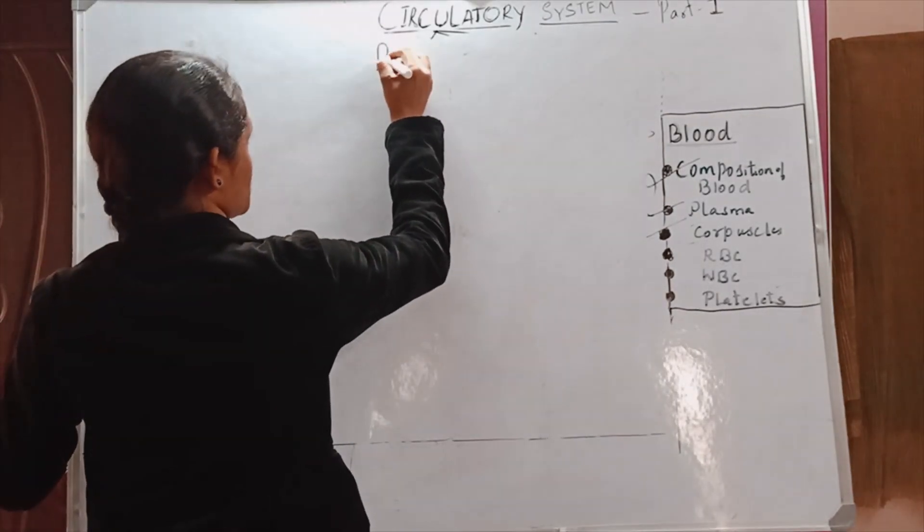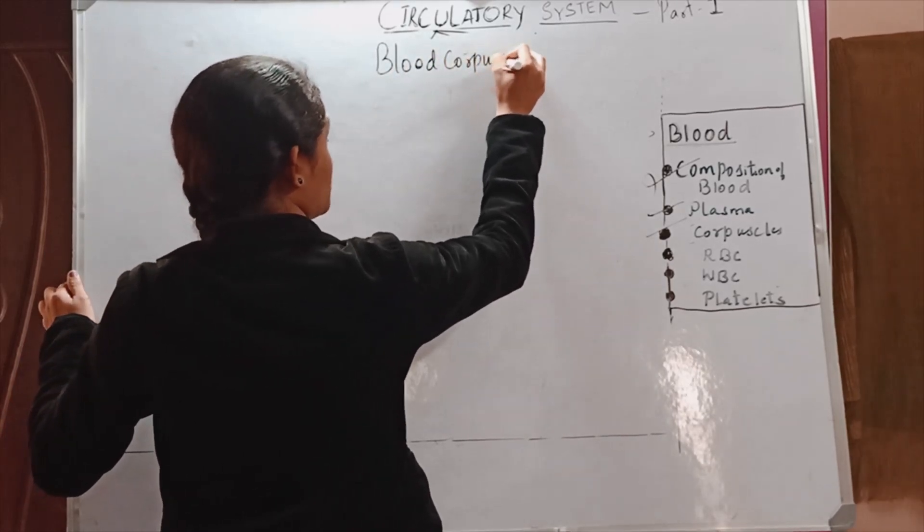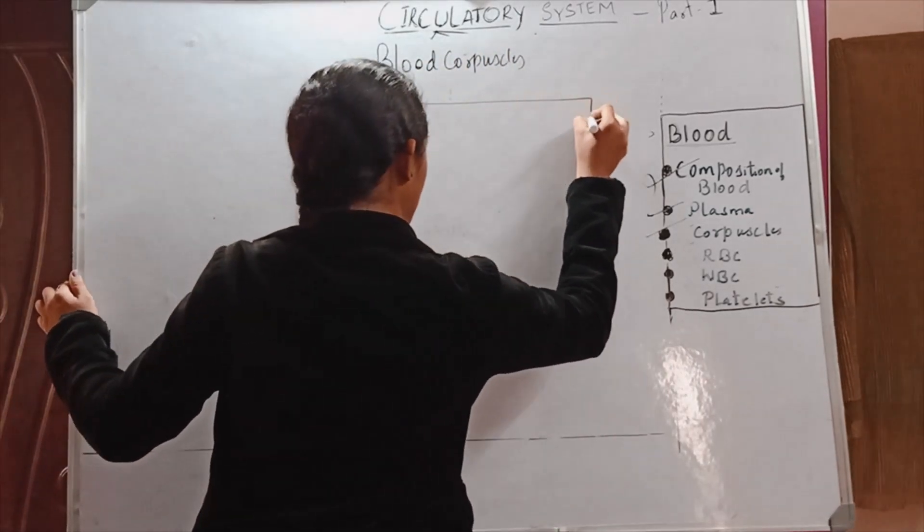Blood corpuscles are composed of... blood corpuscles are nothing but the cells present in the blood.